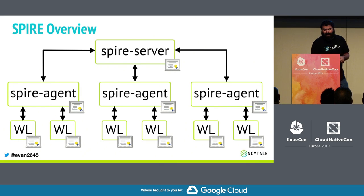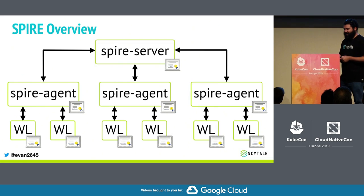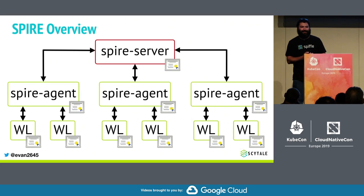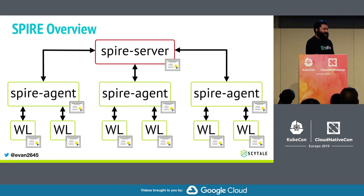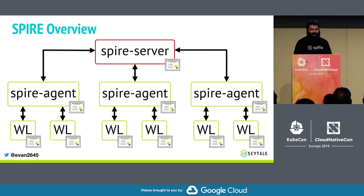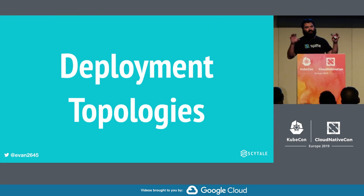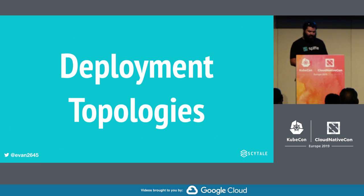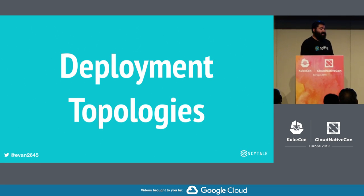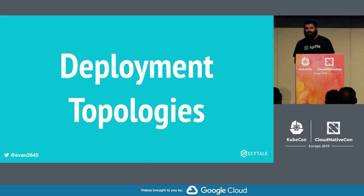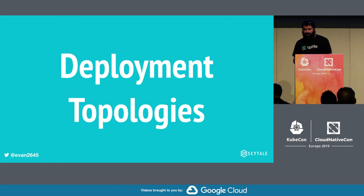At this point you might be asking: what's the deal with this server component? How am I supposed to do this cross-cloud thing when I have a server component? How many of them can I have, and if I have more than one, how do they interact? This is what I want to talk about regarding deployment topologies or configurations of SPIRE. We've been thinking about this for a long time, and in order to support cross-platform deployments, we've implemented three different kinds of general topologies, each solving a different problem.